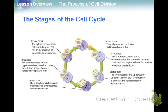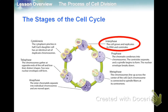Here's the cell cycle shown in a different diagram — not in terms of time, but in terms of what's happening. Remember that interphase is the vast majority of the cell cycle: G1 (growth), then S (synthesis of DNA), and then G2 (getting ready for division).